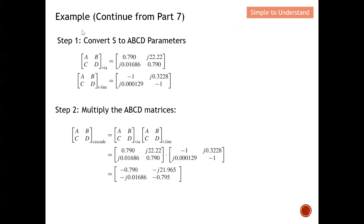In Part 7, I showed Step 1: converting S-parameters to ABCD parameters. So I have the ABCD parameters of the via, converted from the S-parameters, illustrated here. I also converted the S-parameters into ABCD parameters for the transmission line, as shown here. These were all done in the Part 7 series discussion, so if you are not sure, please refer to that.